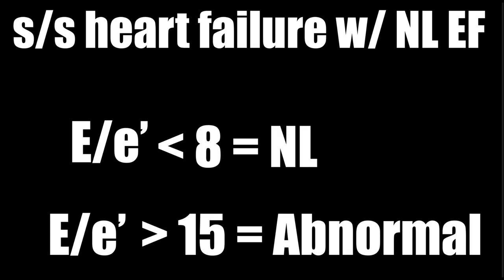There's an easy equation applicable in most patients: E over E prime. Take the velocity of the E wave from mitral valve inflow and divide it by the velocity of the E prime wave from the tissue Doppler. If that number is less than 8, the person has normal diastolic function and does not have increased filling pressures. If E over E prime is greater than 15, that person has increased filling pressures. So E over E prime is the fastest way to get to the clinical significance — less than 8 means normal filling pressure, greater than 15 means abnormal filling pressure.